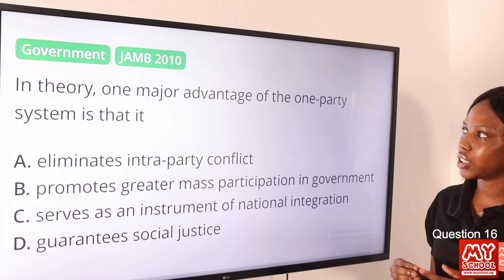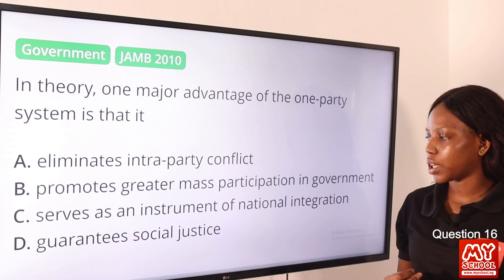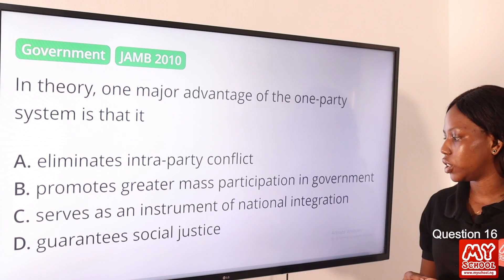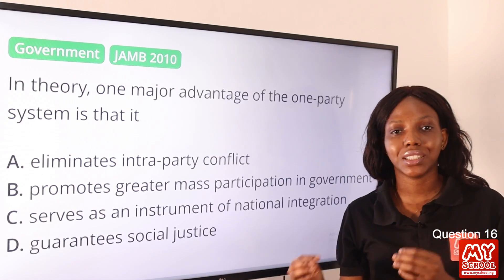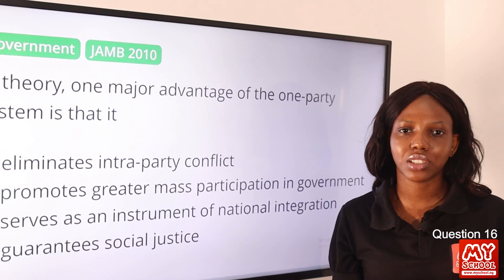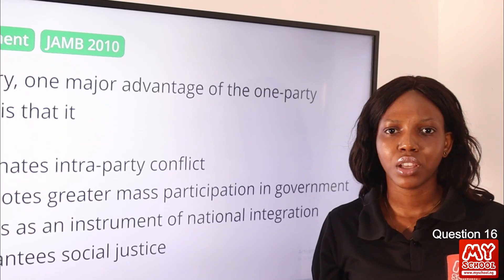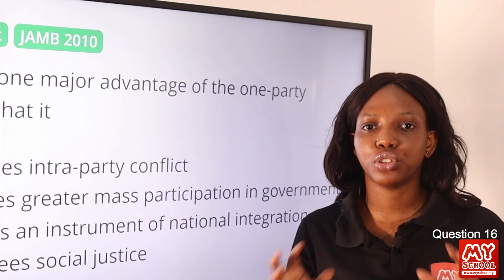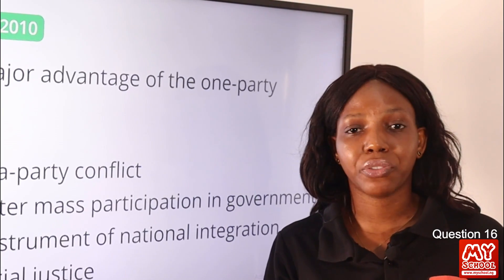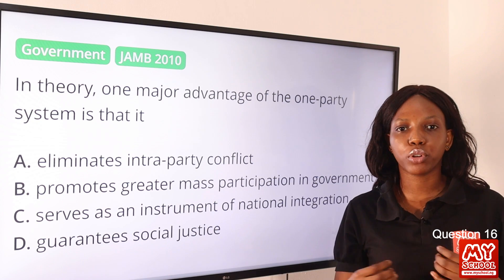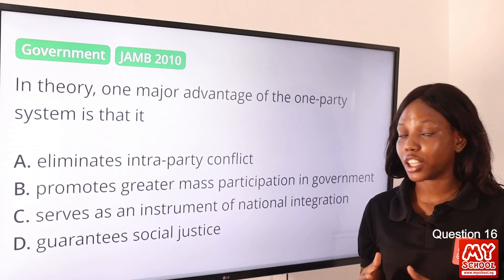Question 16: One major advantage of the one-party system is that it — option A, eliminates intra-party conflict; option B, promotes greater mass participation; option C, serves as an instrument of national integration; option D, guarantees social justice. The answer is option C. The one-party system recognizes only one legal party. It prevents economic waste, prevents unhealthy rivalry, and enables quick decision-making. Most importantly, it promotes unity by embodying different cultures, ethnic groups, and religious organizations, cutting across ethnic and religious factors. So it promotes national integration, national peace, and national unity. Option C is the final answer.